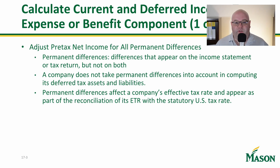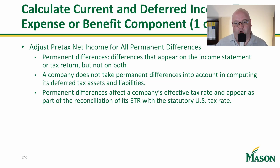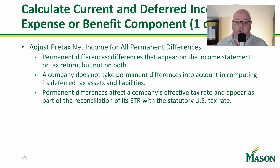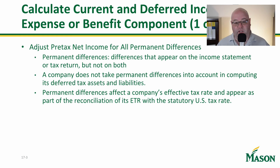Permanent differences are things that appear on the income statement or on the return, but not both. For example, penalties are a financial component but tax won't let you take a deduction for it. Conversely, if you have investments in municipal bonds, you're going to recognize that as income but it's not going to show up on the tax return. Another item that will show up on the financial statement but not the return is unrealized gains and losses in trading securities accounts.